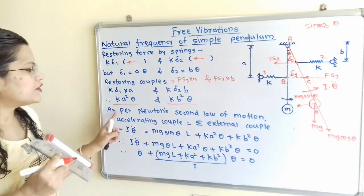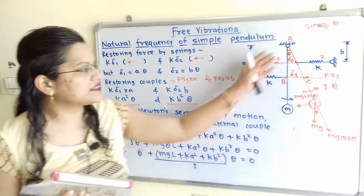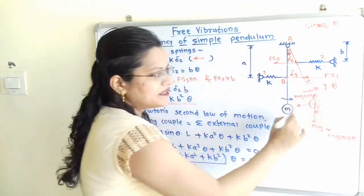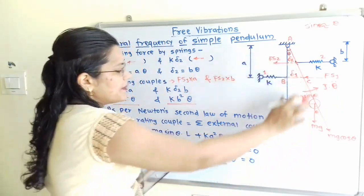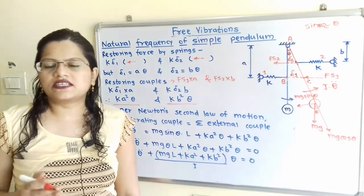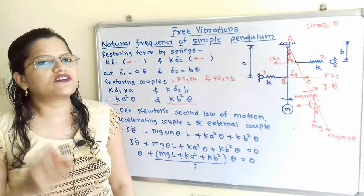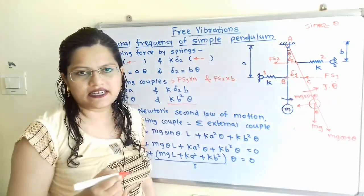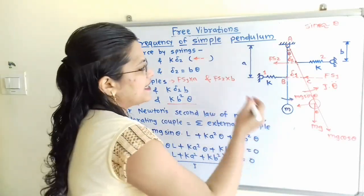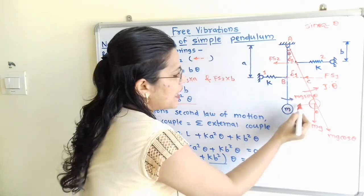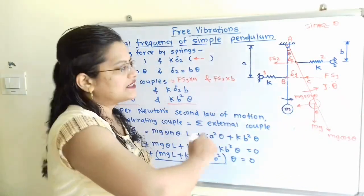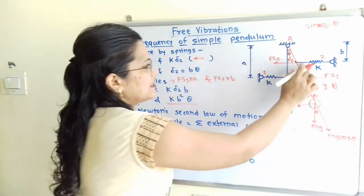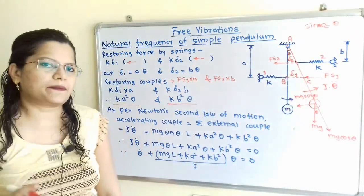We apply Newton's second law of motion to this free body diagram. As per Newton's second law, the accelerating couple equals the summation of external couples. The accelerating torque acts towards the right-hand side direction. In the opposite direction, the component Mg sin theta acts towards the left, and the spring force FS1 also acts towards the left-hand side direction.